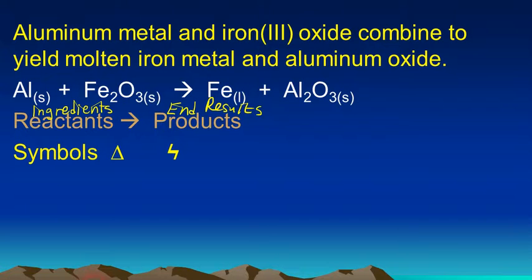Sometimes we add other symbols into our chemical equation. If you ever see an arrow that has a triangle over it, that means that we're adding heat to the reaction. That's what the triangle symbolizes. If you see an arrow that has a lightning bolt over it, like this, that means we have to add electricity to the reaction. And the reaction takes place in what's called electrolysis. It's an electrolysis reaction.